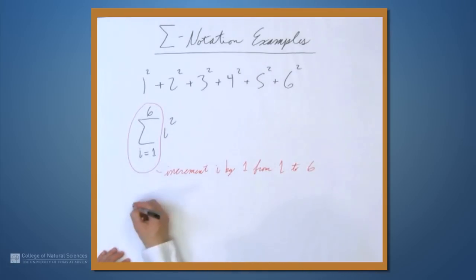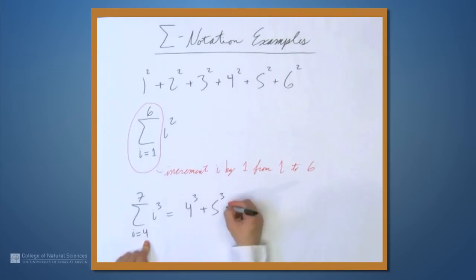So let's look at another example. Let's say sigma and i equals 4 to 7. And usually we'll say the sum i equals 4 to 7, right? We won't say sigma. i³. So what is this? Well, we'll start with 4 and we get 4³, then 5³, and we'll add that to the 4³, plus 6³, plus 7³.